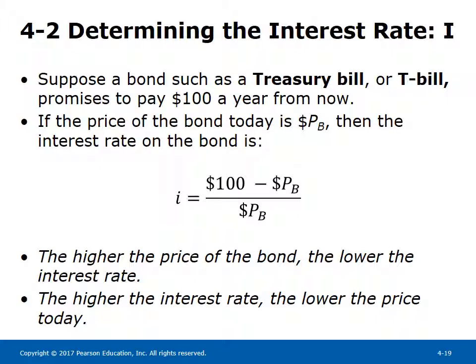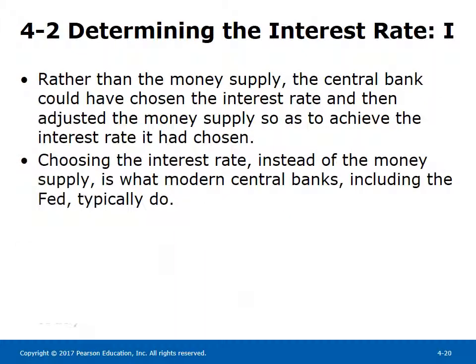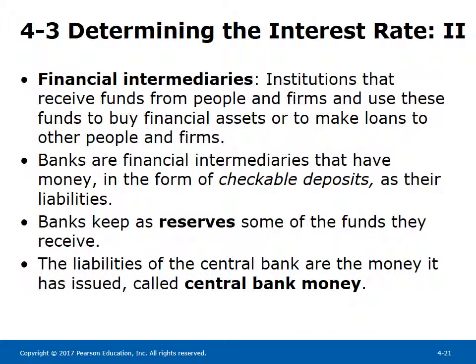Rather than targeting the money supply, the central bank could choose the interest rate and adjust the money supply to achieve it. Choosing the interest rate instead of the money supply is what modern central banks, including the Fed, typically do. Financial intermediaries are institutions that receive funds from people and firms and use these funds to buy financial assets or make loans. Banks are financial intermediaries that have checkable deposits as their liabilities.